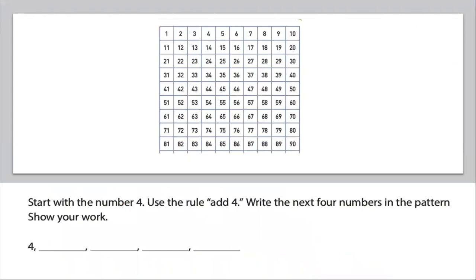Another way that we can identify patterns is by using a hundreds chart. We first need to find what number we're starting with. They ask us to start with the number four, so I'm going to circle the number four on my hundreds chart. My rule is add four, so I'm going to add four to that four, which means I'll count one, two, three, four, which lands me at eight.